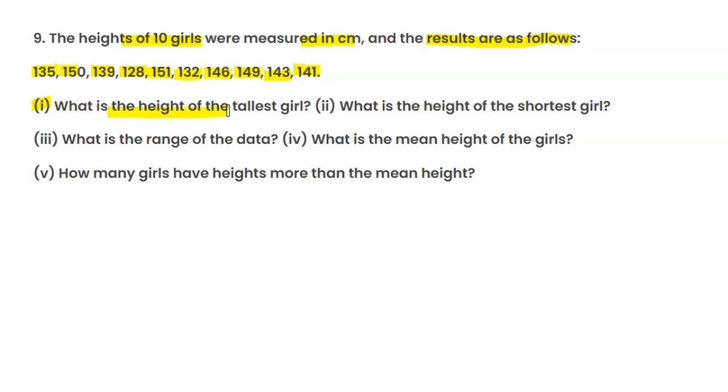So first part is, what is the height of the tallest girl? The tallest girl's height is 151 cm. What is the height of the shortest girl? The smallest girl's height is 128 centimeter.